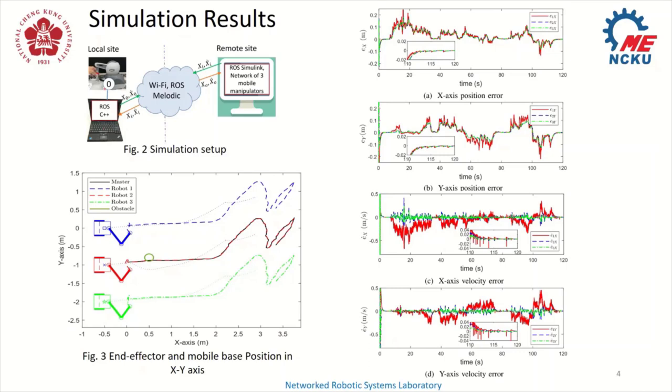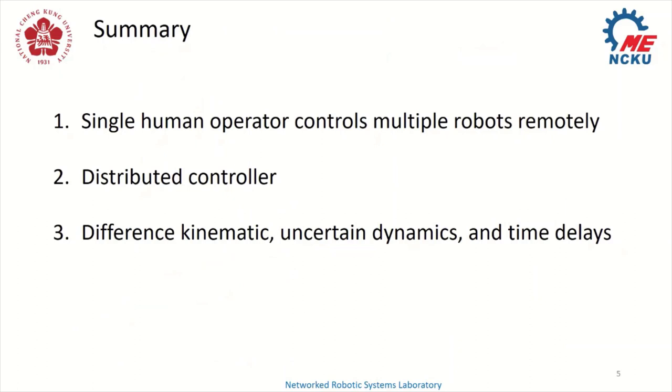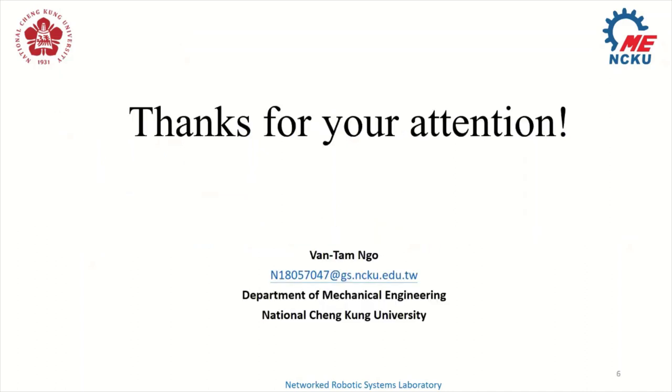The local and remote systems are connected through ROS. To verify the control law 3 for each robot, we get the results as shown in figure 3, where we can see that the end effector of mobile manipulator can form a formation and follow the local robot end effector. The tracking error can be observed on the figure on the right. The contribution of this work can be summed up as first, we propose a control framework for a single human operator control multi-robot system remotely. Secondly, the proposed control is distributed that enhances the flexibility and scalability of the network system. Last but not the least, the proposed control can be applied for a network robotic system with different kinematic, uncertain dynamics and time communication delay. Thanks for your attention.